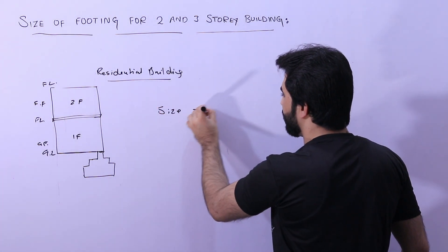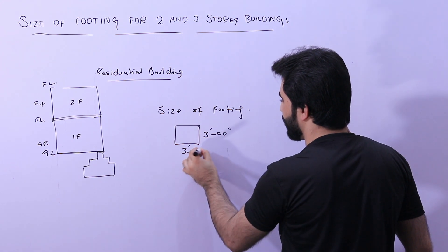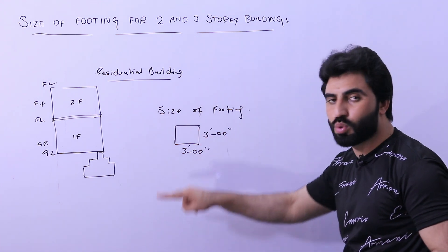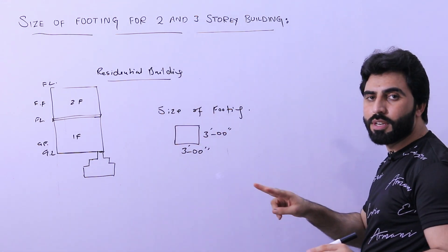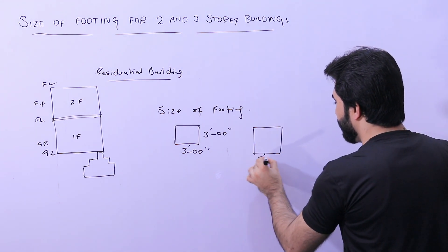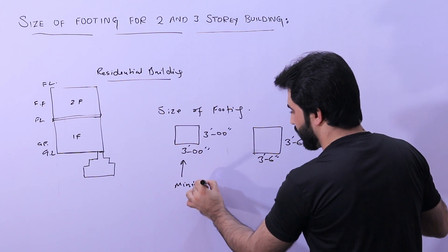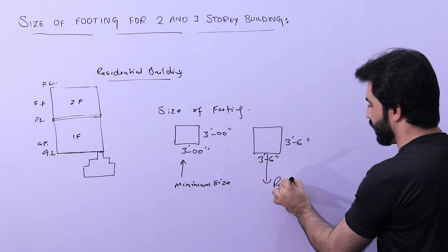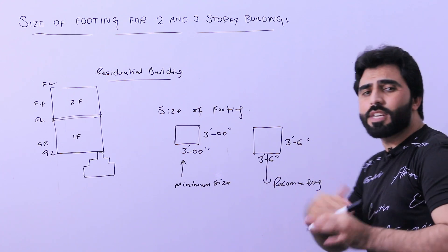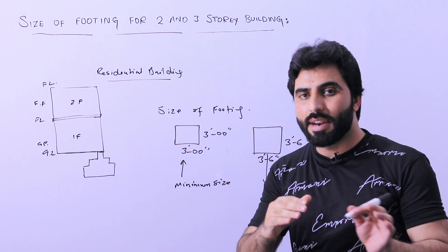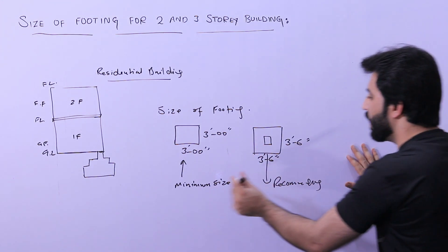The size of footing should not be less than three feet by three feet — that is 3'0" by 3'0". This is the normal minimum size of footing for a two-story residential building. However, I am recommending you keep a larger size. The recommended size is 3'6" by 3'6". Also remember, the size of footing depends on the size of the column. The column size should not be less than nine by twelve inches, and for that column size the footing should be three feet six inches by three feet six inches.